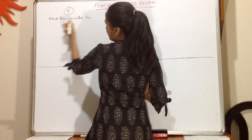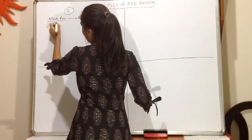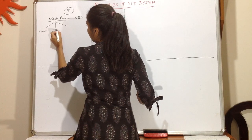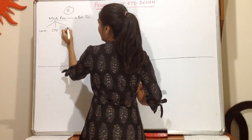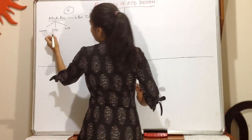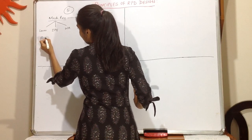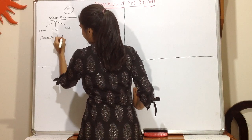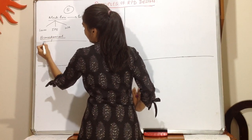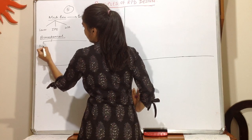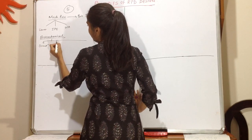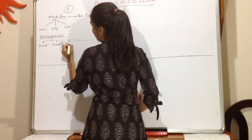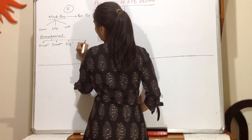There are basically 3 mechanical principles: the lever action, the inclined plane effect, and the wheel analyzer. The biomechanical considerations on which this RPD will work are: direction, duration, frequency, and magnitude.